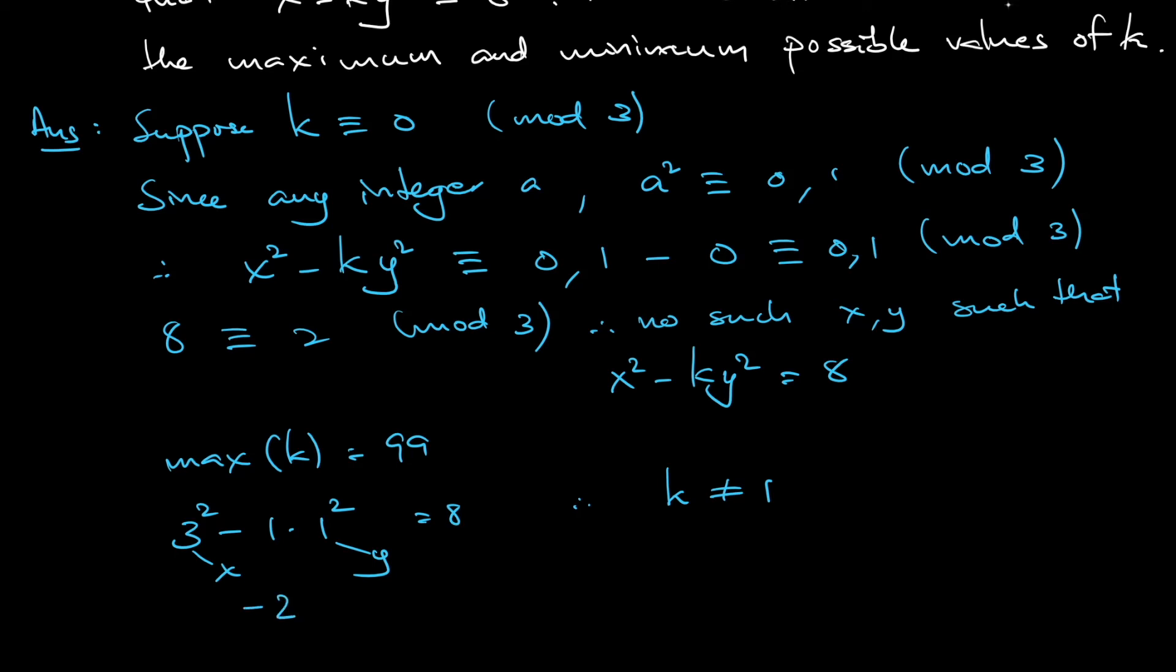If k is 2, there does exist such squares to get equal to 8 also. Notice that 4² is 16, minus 2 times 2². So if this is x, this is y. See, there is also such x, y whereby this value is equal to 8. So that means that k cannot be 2 as well.